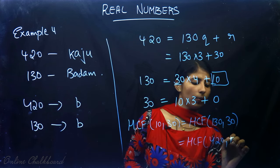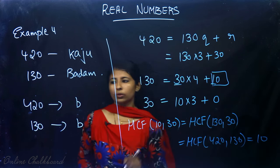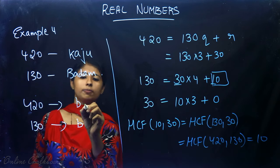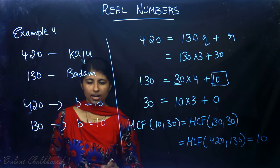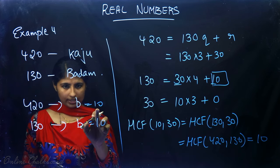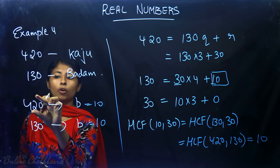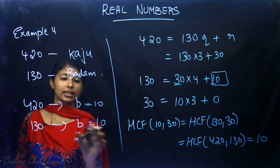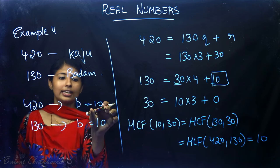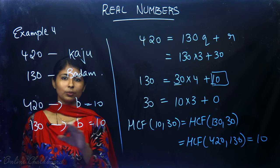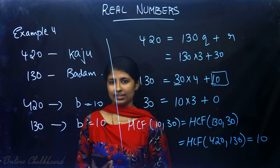So the value of B is 10. Therefore each stack will have 10 barfis. The kaju barfis will form 42 stacks and the badam barfis will form 13 stacks, each with 10 barfis. So each stack will contain an equal number of barfis.